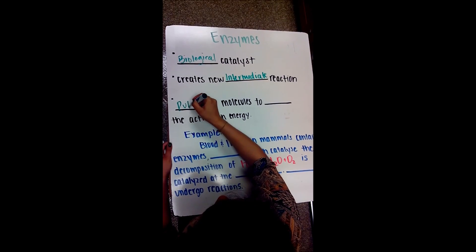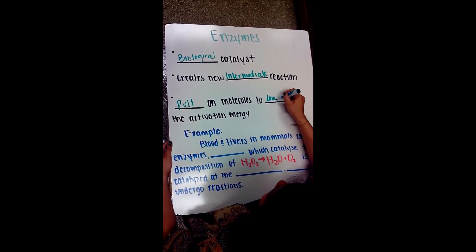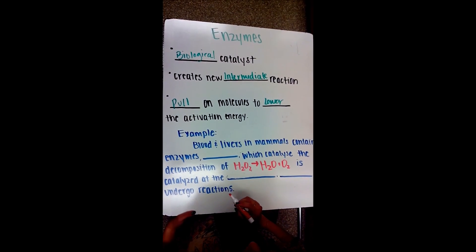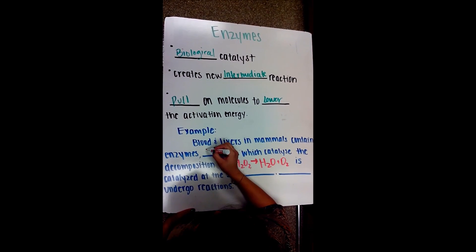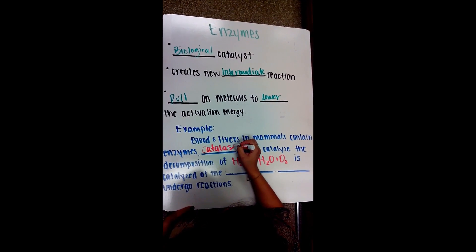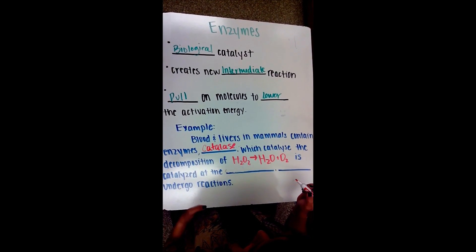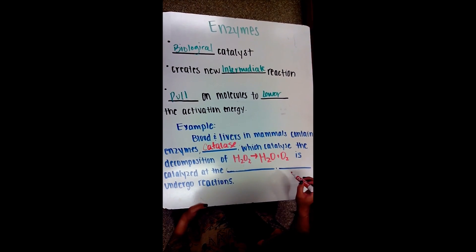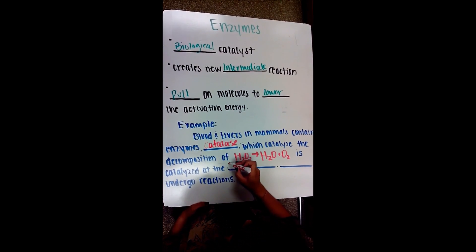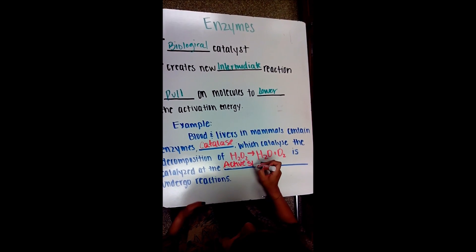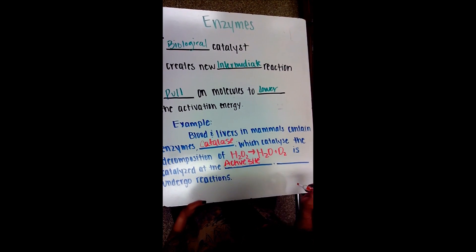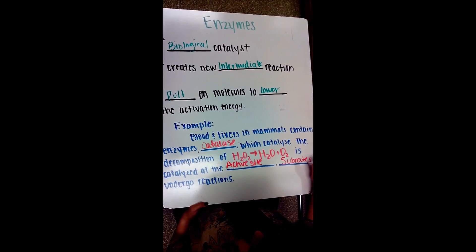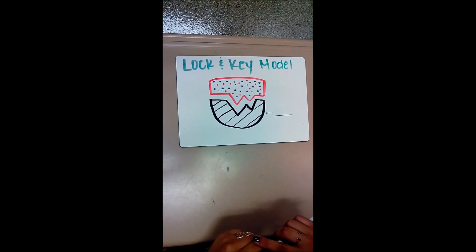Enzymes hold molecules to lower the activation energy. An example would be how the blood and liver in mammals contain enzymes, catalase, which catalyze the decomposition of H2O2, which yields H2O and O2, which is catalyzed at the active site. Enzymes substrates undergo reactions. Let's take a look at how an enzyme works.